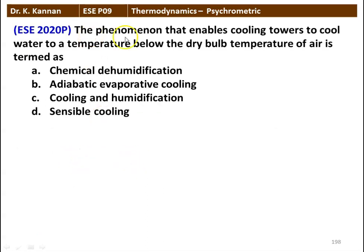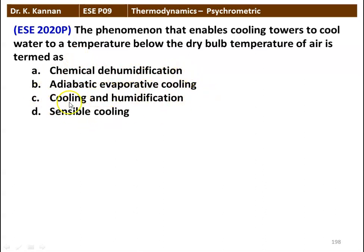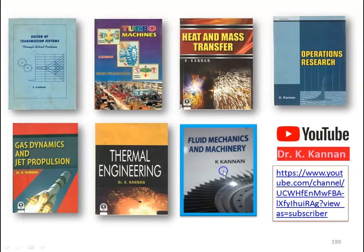Next question: the phenomenon that enables a cooling tower to cool water to a temperature below the dry bulb temperature of air is termed as — chemical dehumidification, adiabatic evaporative cooling, cooling and dehumidification, or sensible cooling process. The correct answer is adiabatic evaporative cooling.